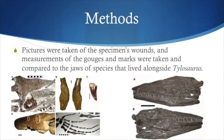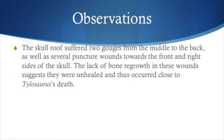In the image on the left, you can see the compared pictures of two healed puncture wounds from the Tylosaurus's jaw, as well as a broken tooth from the Tylosaurus. In the image on the right, you can see the left and right lateral view of the Tylosaurus's skull. From the pictures and measurements taken, we observed that the skull roof suffered two gouges from the middle to the back. Puncture wounds were also found at the front and right sides of the skull. Bone regrowth from these wounds was close to non-existent, suggesting that the Tylosaurus was close to death.